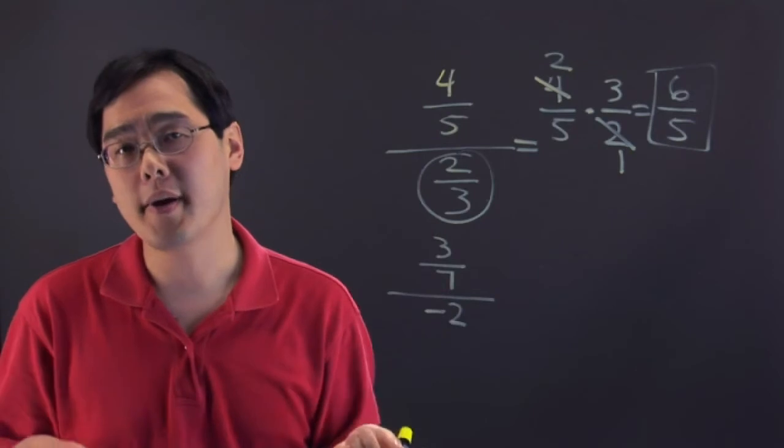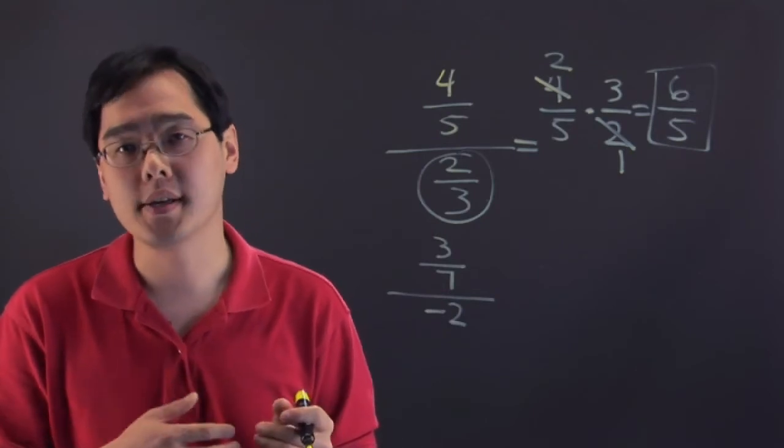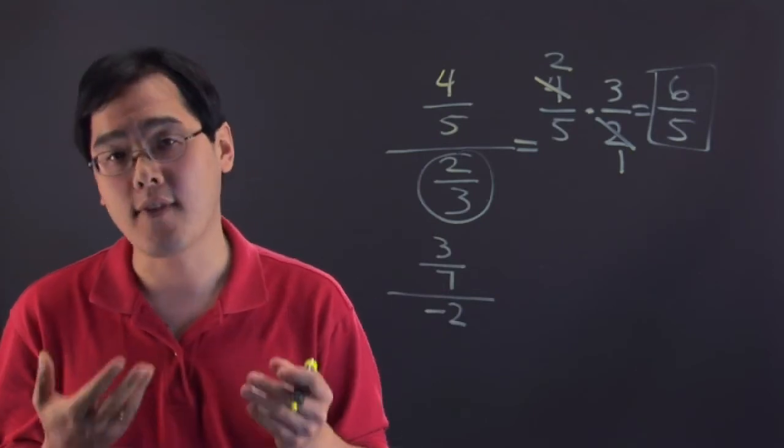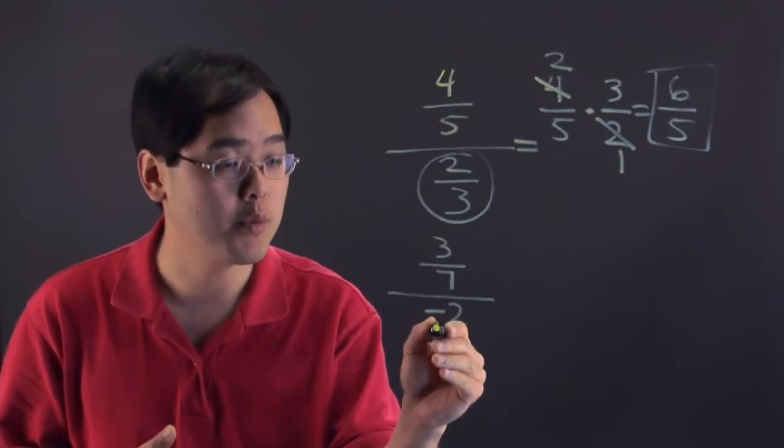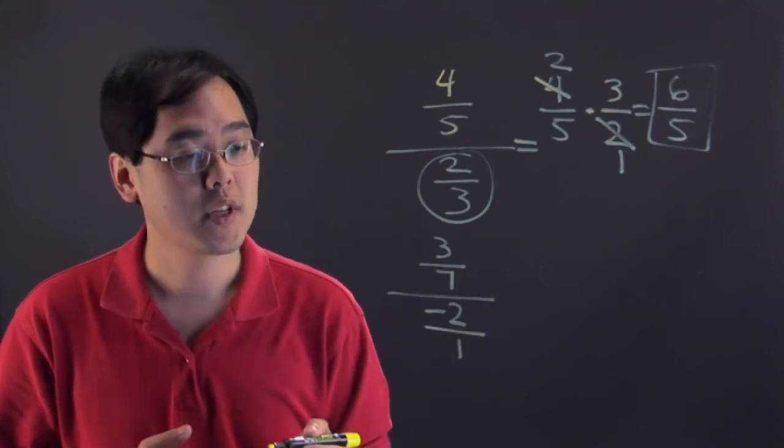Now if you're dividing by a whole number, what you want to think about is take the denominator and write a fraction in its place. So negative 2 can be thought of, any whole number can be thought of as that number over 1.